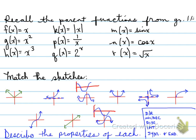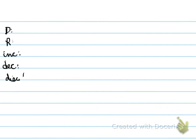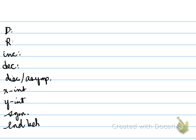Alright, so what we're going to do is describe the properties of each of these. We're going to state the domain and range, whether they increase or decrease, the points of discontinuity, the intercepts — whether they're x and y and what they are — the symmetries, so whether they're even, odd, or neither, and finally their end behaviors. We're going to take each one of these graphs and describe each one individually.